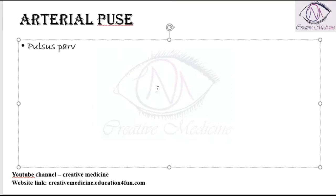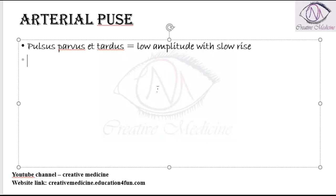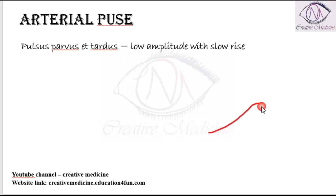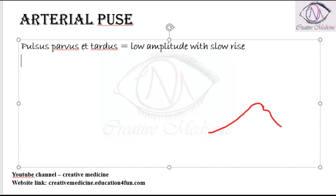Pulsus parvus et tardus means there is low amplitude with slow rise. This type of pulse is seen in severe valvular aortic stenosis.